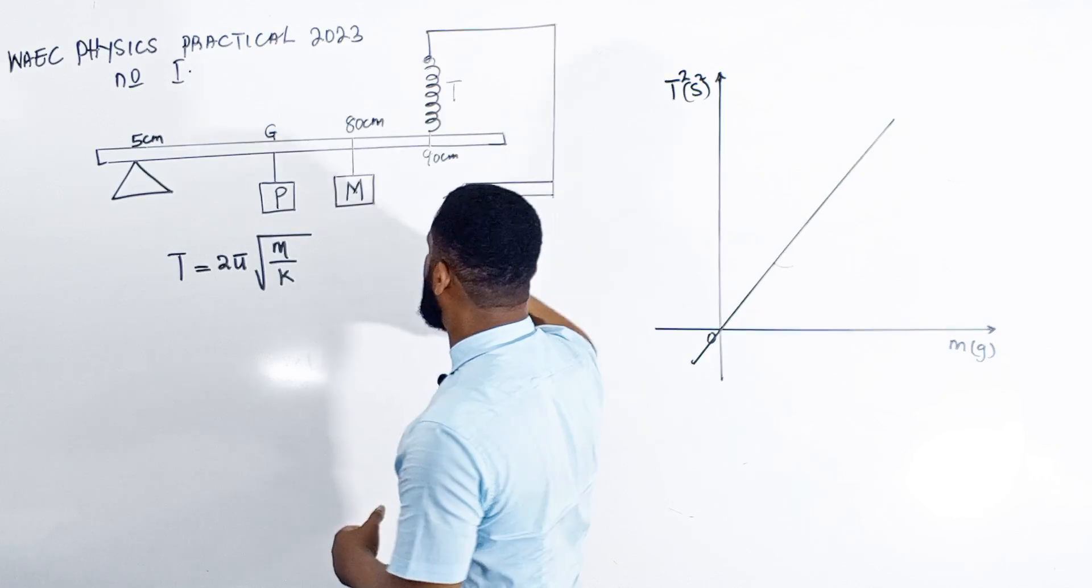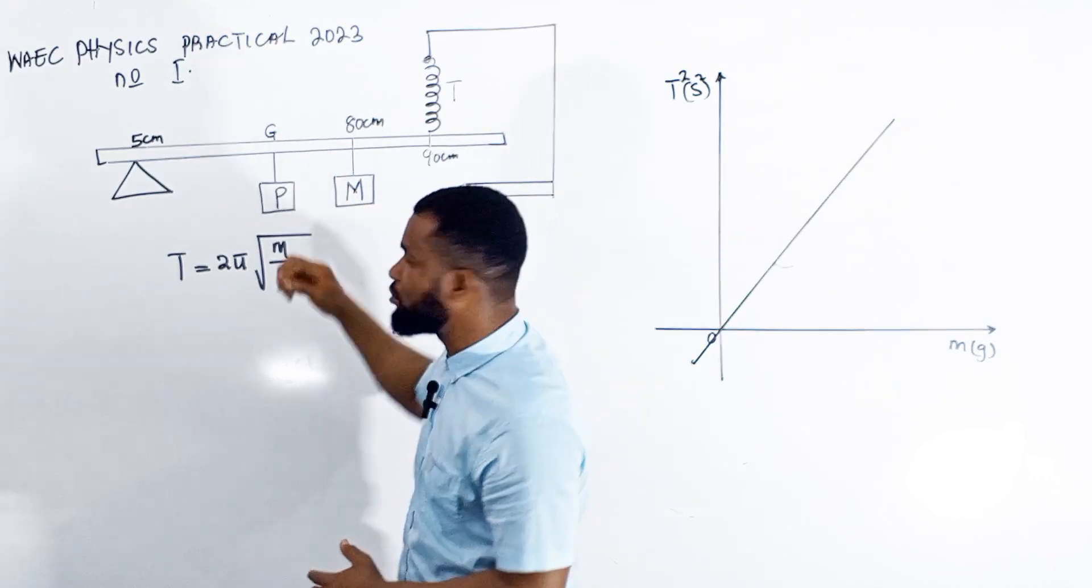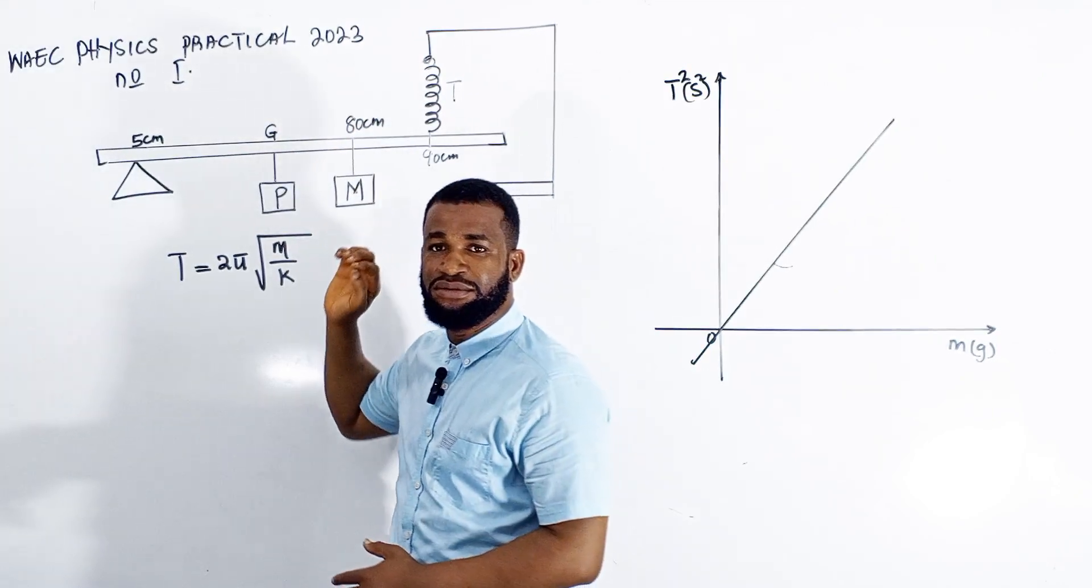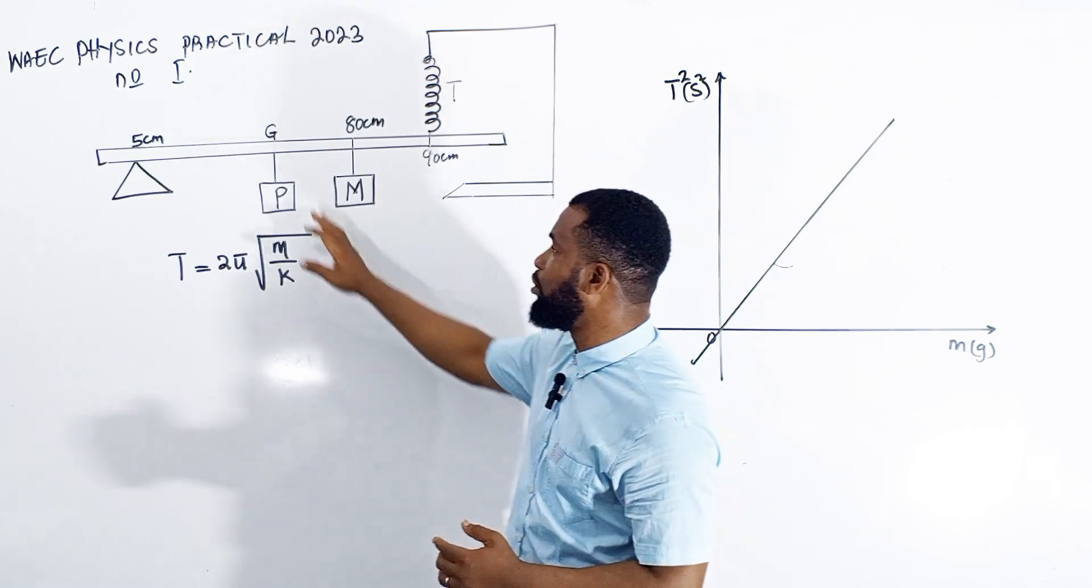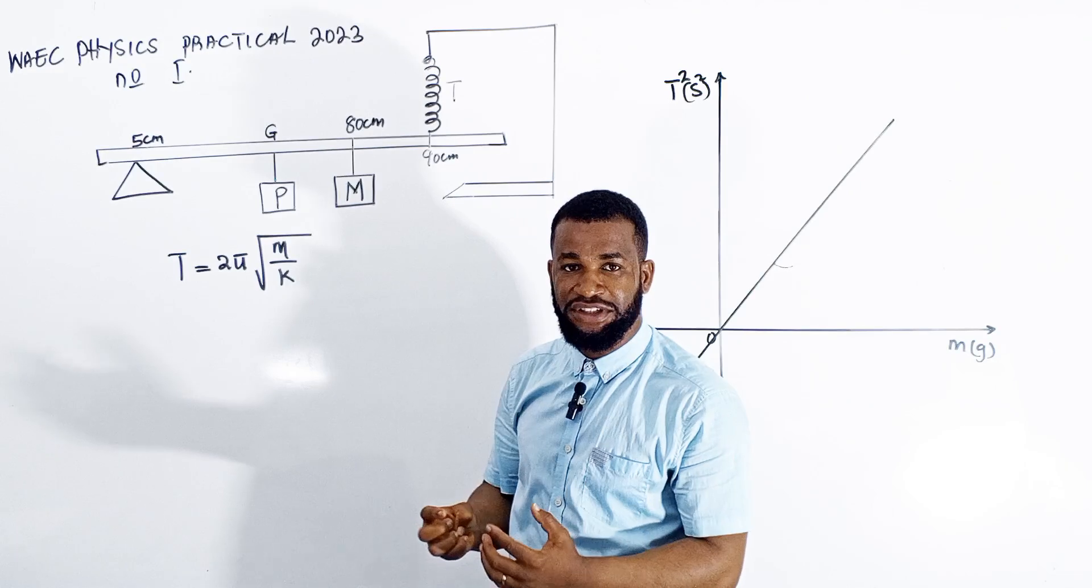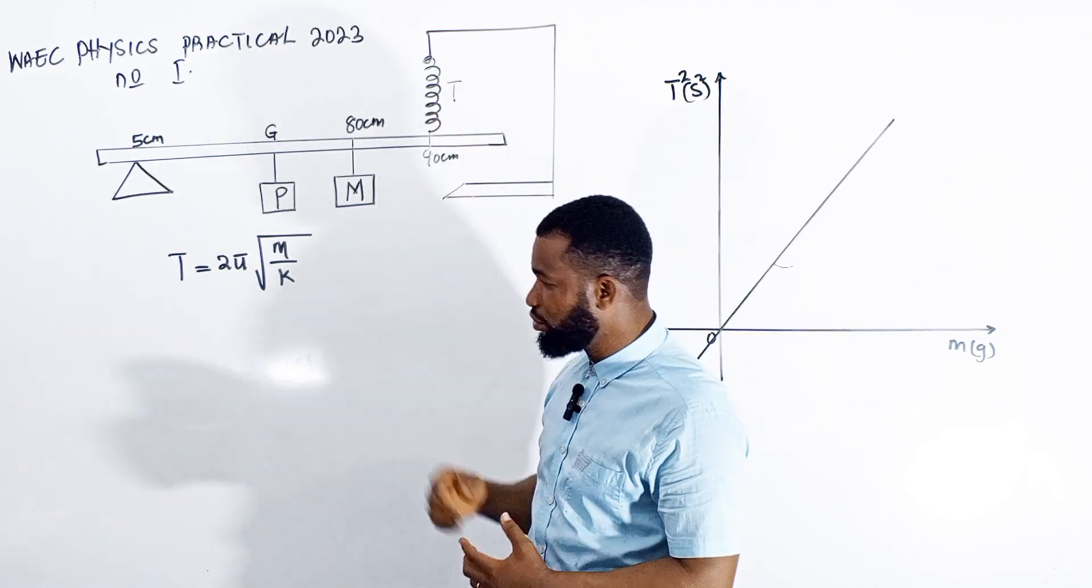In this setup, I decided to put the 100 grams at the center of gravity of the meter rule. I did this to give the meter rule more weight and help it oscillate, because we are going to do an oscillation.